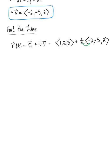Distributing our parameter through to each component of our parallel vector, we can think about this as the vector (-2t, -5t, 2t). And now using vector addition, we can add up those like components. And this leaves us with a beautiful final answer.